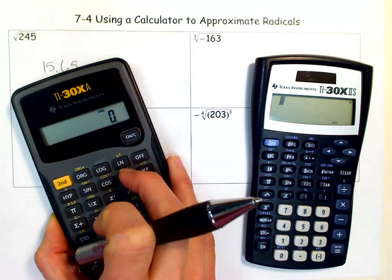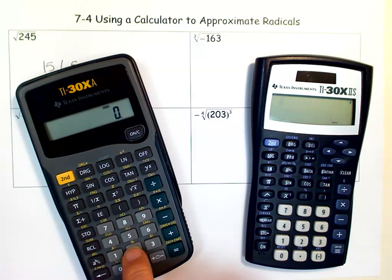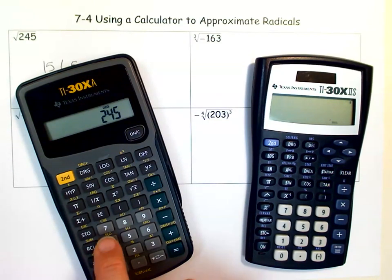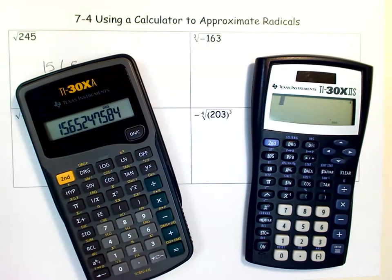Sometimes you have a different kind of calculator, for example this one. On this calculator you have to put 245 in first and then hit the square root button, and you get the same thing.